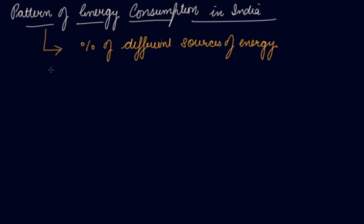So in India, different sources of energy are converted into one common unit. The common unit for the different sources of energy is MTOE, that is million tonne of oil equivalent.